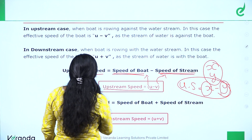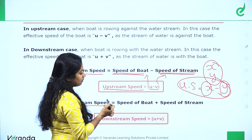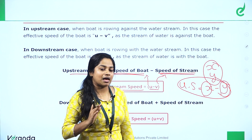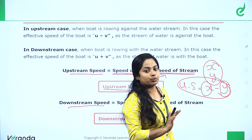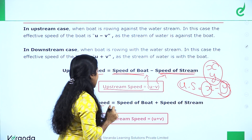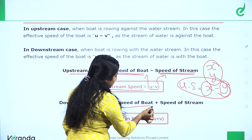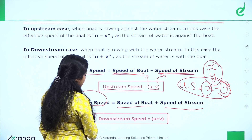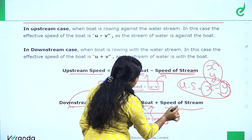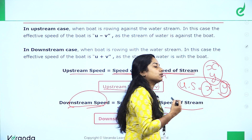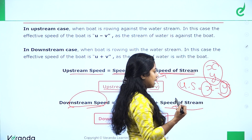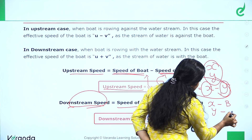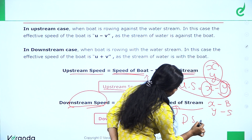The downstream speed: when going downstream, the boat and stream move in the same direction, so we add the boat speed and the stream speed. The downstream speed is u plus v. So if the boat speed is u and the stream speed is v, downstream speed equals u plus v.